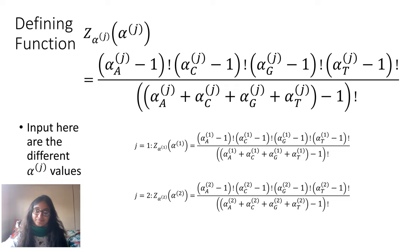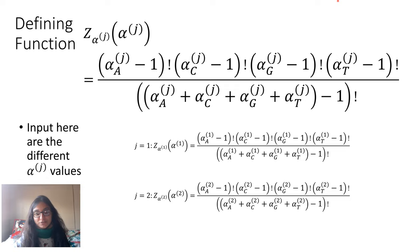We take these alpha_{A,J}, alpha_{C,J}, alpha_{G,J} values and then define for these two components this formula to define our Z(alpha^J) function. This is examples where I plug in J equals 1 and then J equals 2. It might not make a lot of sense right now, but we will sort of put everything together and then it should make a lot more sense.